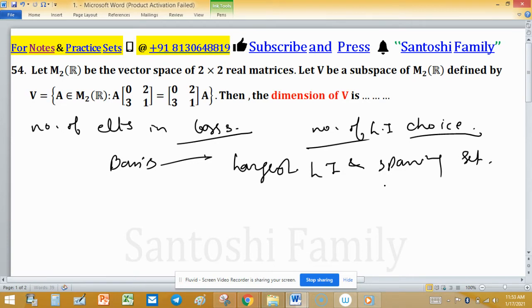So we need only the number of linearly independent choices. As A is from M₂(ℝ), it means all 2 × 2 matrices with entries from the real field.